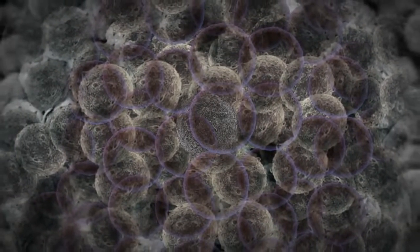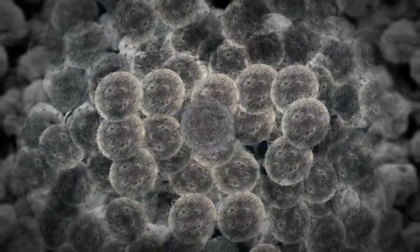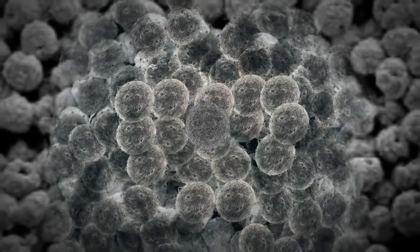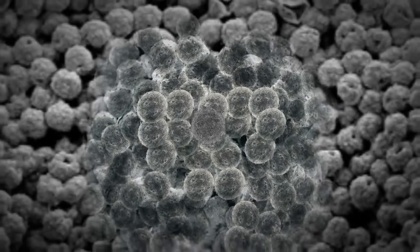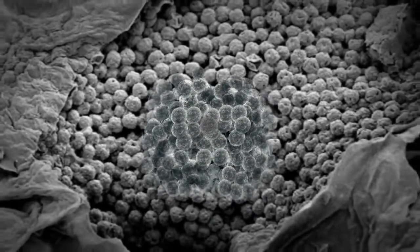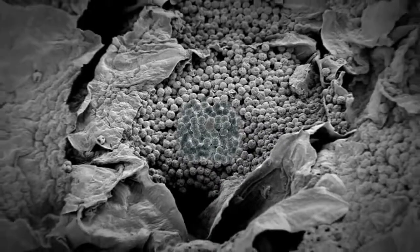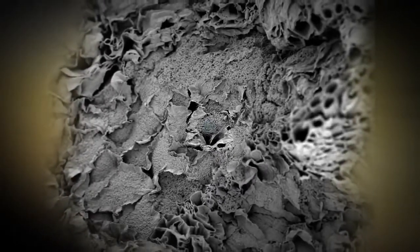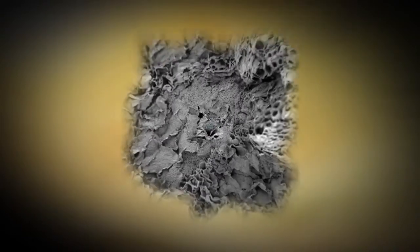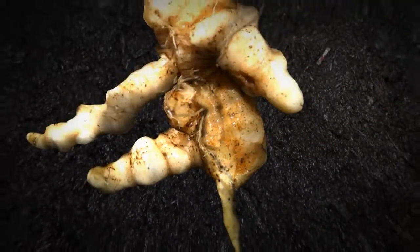Even before the plant begins to die, the pathogen starts forming new resting spores. The plasmodia, which filled up the plant cells, start dividing into tiny spores—thousands to tens of thousands per cell. We can easily see how billions of resting spores can be produced from a single infected root.